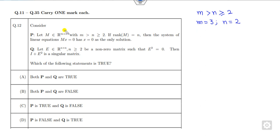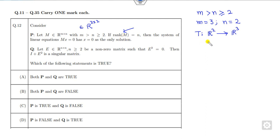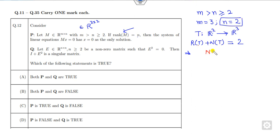M belongs to R^{3×2}, which means there is a mapping from R² to R³. Now, when you think about rank, the rank-nullity theorem comes to mind: rank of T plus nullity of T must equal the dimension of the domain. Rank is given as N, which I consider as 2. So what is the meaning of nullity being 0?